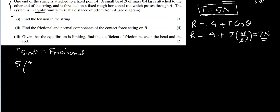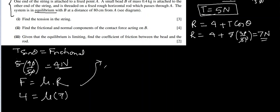Third part: given that the equilibrium is limiting, find the coefficient of friction between bead and the rod. So we know the friction is mu times R. Friction is 4, mu is unknown, R we got earlier is 7 Newtons. So that gives us mu equal to 4 over 7, or we can convert it to 0.571. That is the coefficient of friction.